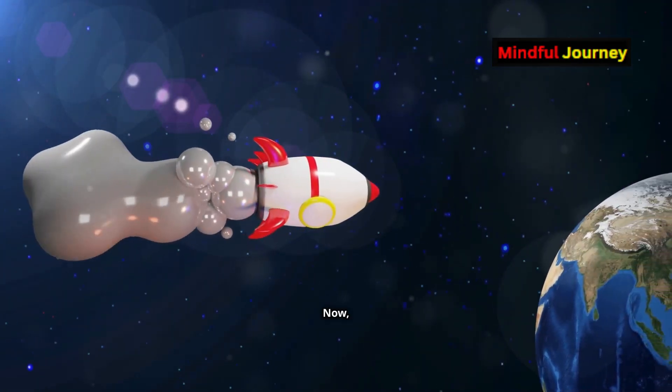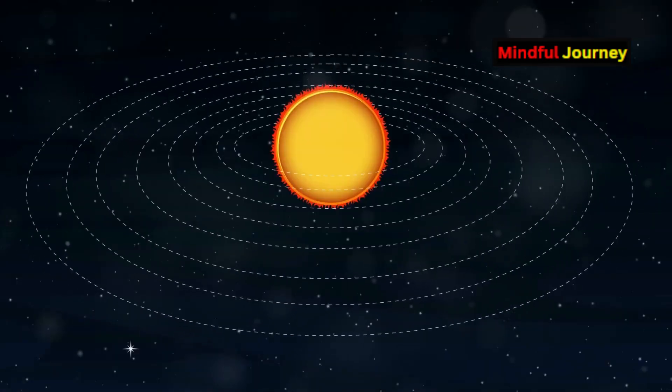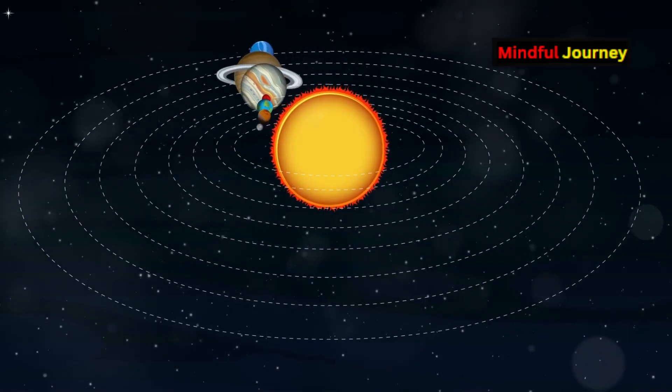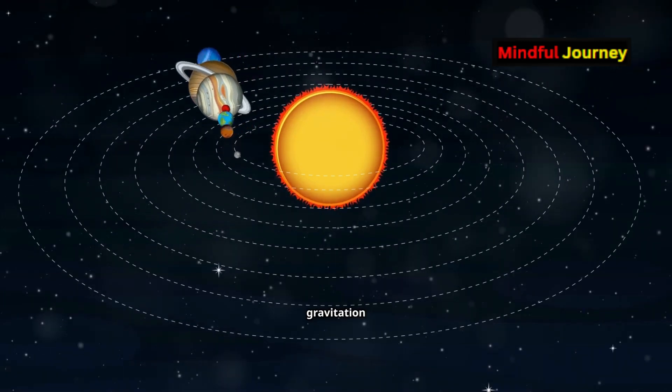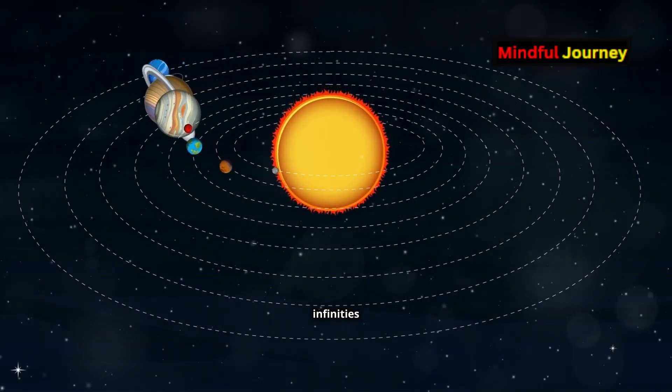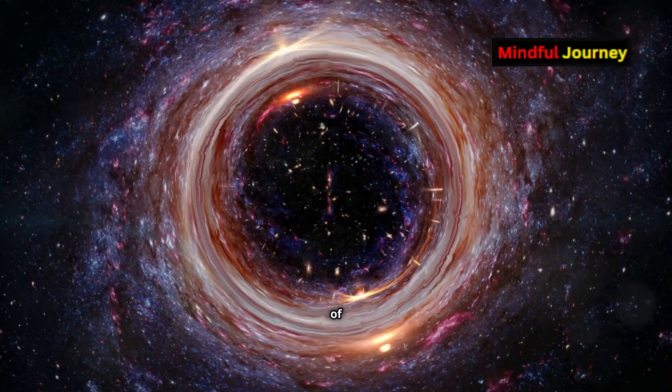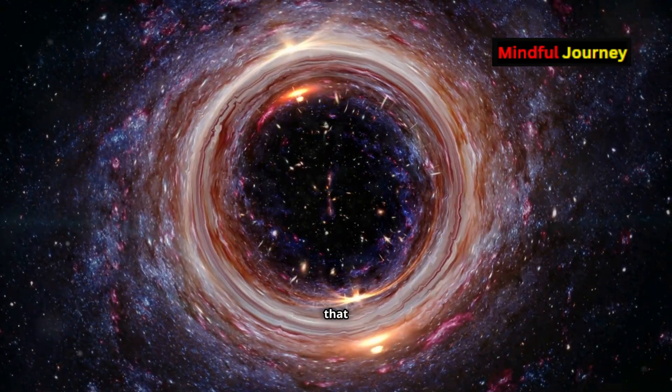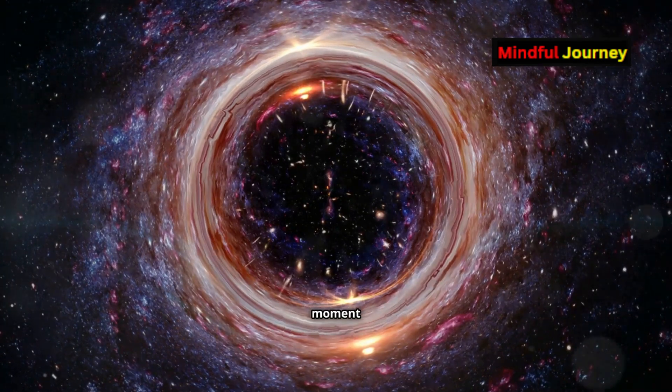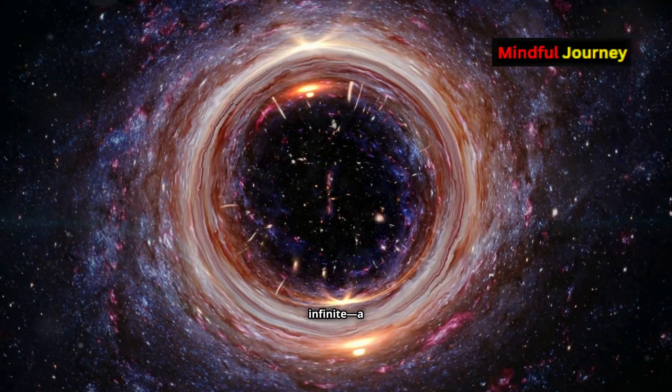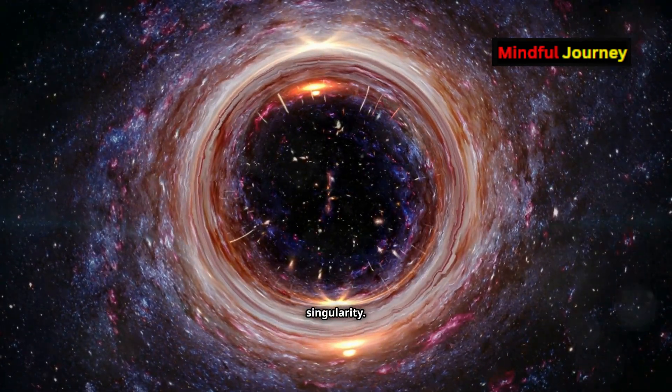Now let's shift gears to cosmological infinities. In cosmology and gravitation theory, infinities also make an appearance. For example, Einstein's theory of general relativity predicts that the density of the universe at the moment of the Big Bang was infinite, a state known as a singularity.